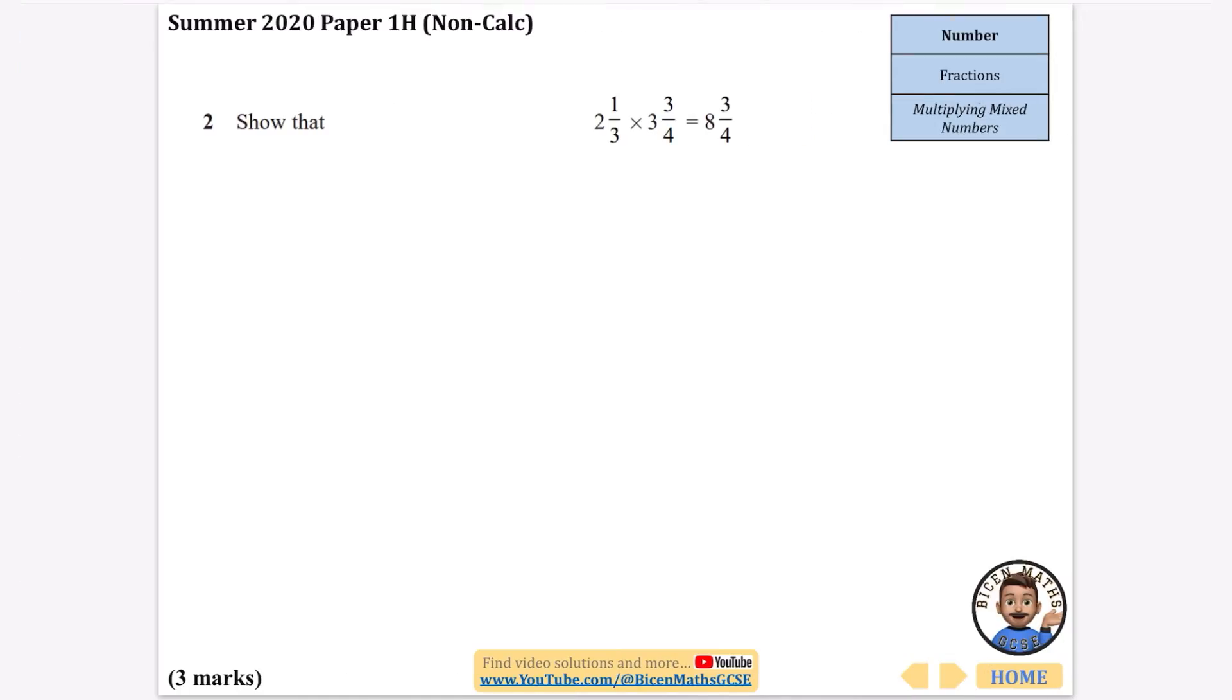This time, it wants us to do a show that question. So we're just going to concentrate on the left-hand side and hope we end up with 8 and 3/4. Same process of multiplying and then adding. So for the first one, 2 times 3 plus 1, that is 7/3. And for the next one, 3 times 4 is 12 plus the 3 is 15. So that is 15/4.